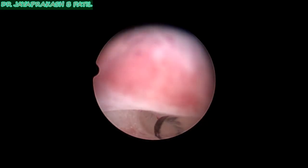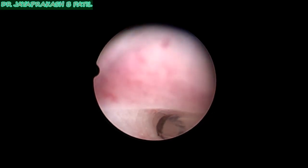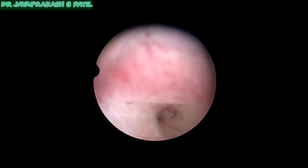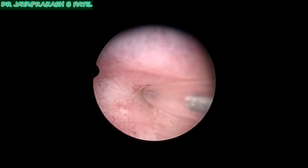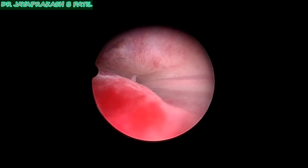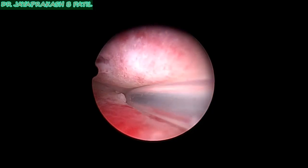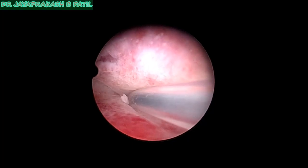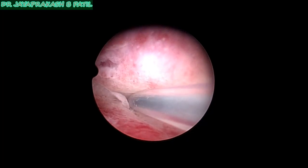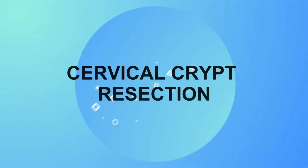Tubal cannulations can also be done where you suspect a tubal block on HSG. This can be done even without anesthesia. But if you want laparoscopic confirmation, of course you need anesthesia.